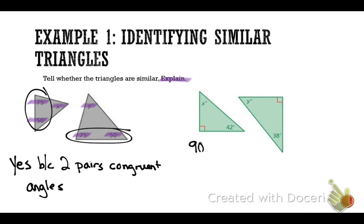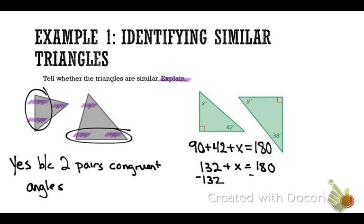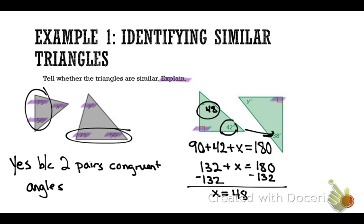132 plus X equals 180. Subtract 132 from both sides, and X equals 48. So if X is 48, let's highlight the congruent angles. We know 90 is one pair, but do either of these two angles match up with 38? No. So it's impossible — even if I solved for Y, I don't have two pairs. I would say no, because there's only one pair of congruent angles.